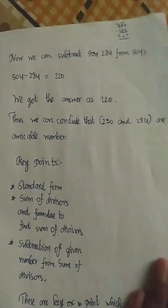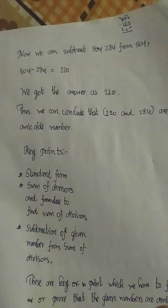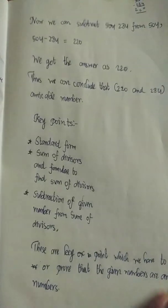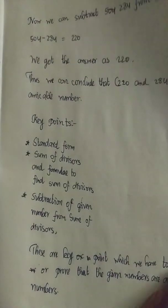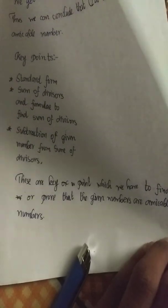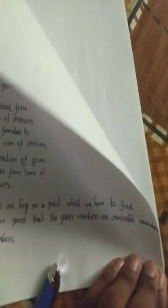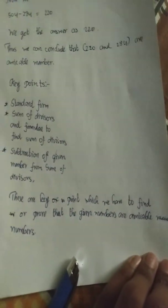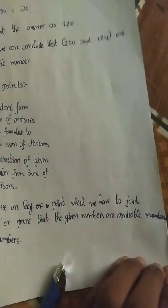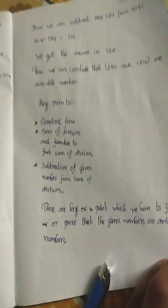Key points: standard form, sum of the divisors and the formula to find sum of divisors, and subtraction of the given number from the sum of the divisors — these are the key points to find or prove that the given numbers are amicable numbers. Thank you.